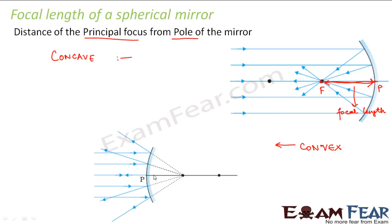Similarly, in the case of a convex mirror, the distance of the focus from the pole is your focal length. Focal length is generally denoted by a small f. For principal focus we use a capital F, and for pole we use a capital P. Please get used to all these abbreviations as we will use them consistently.